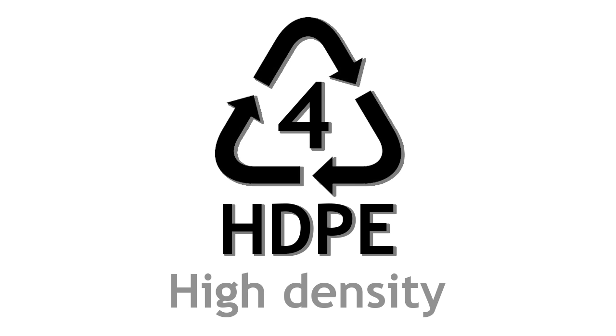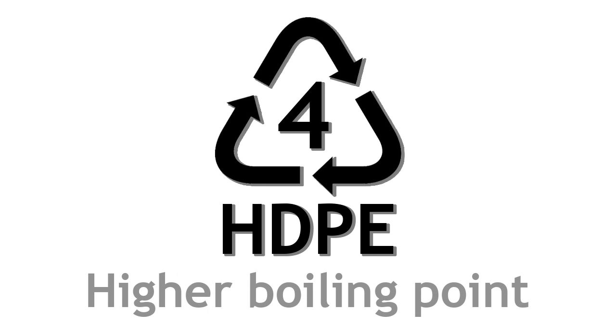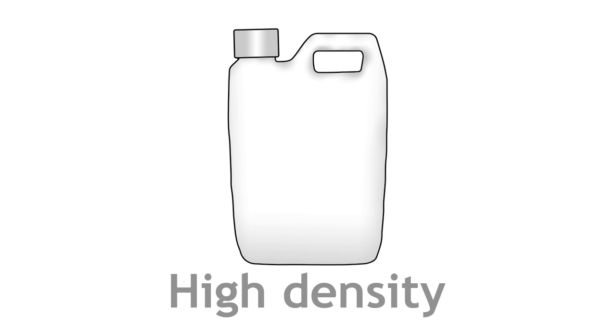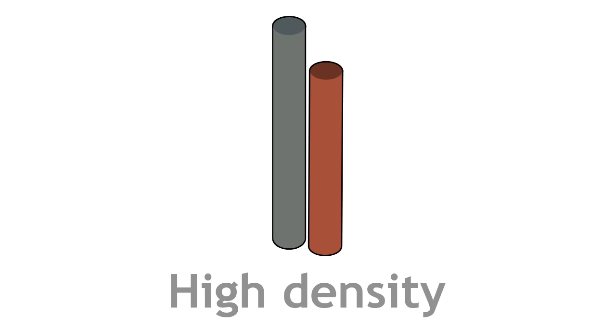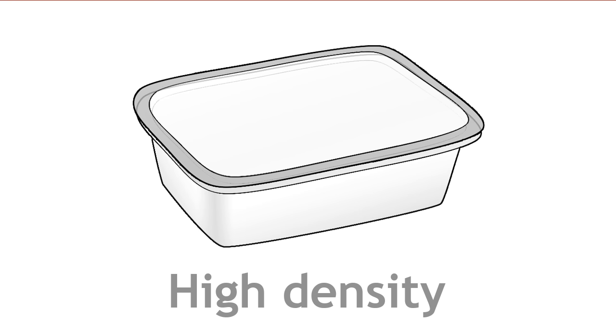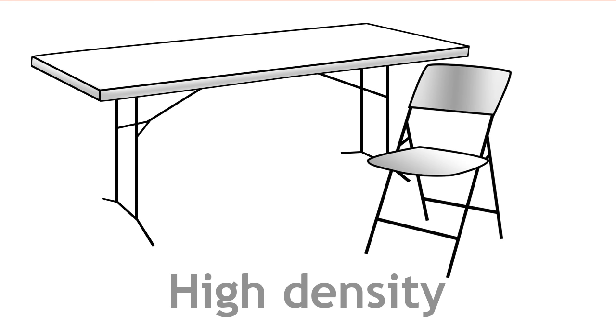High density polyethene, often referred to as HDPE, is stronger and has a higher boiling point. It has many uses, some of which include plastic bottles, chemical and water pipes, food storage containers, and even folding chairs and tables.